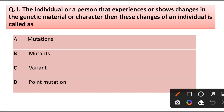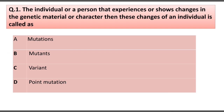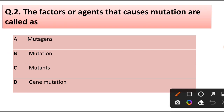Question number 1. The individual or person that experiences slow changes in genetic material or character — these changes of the individual are called: mutation, mutant, variant, or point mutation. Answer is option B: Mutant.